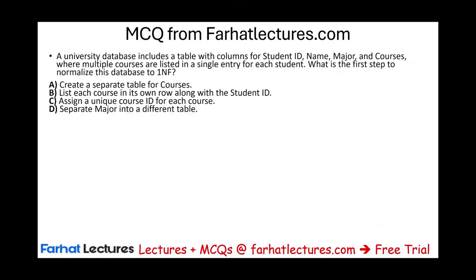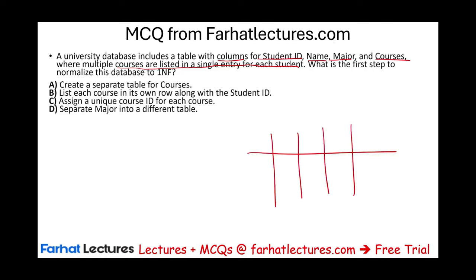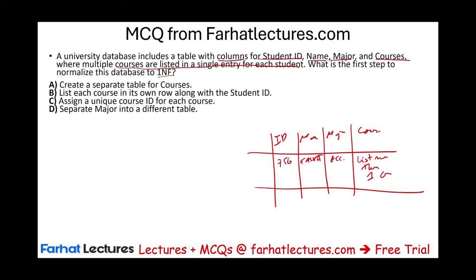Let's take a look at a multiple choice question from FarhatLectures.com. A university database includes a table with columns for student ID, name, major, and courses, where multiple courses are listed in a single entry for each student. What is the first step to normalize this database to 1NF? So imagine we have student ID 756, name Farhat, major accounting, and the courses column lists more than one course. What do we have to do under those circumstances?